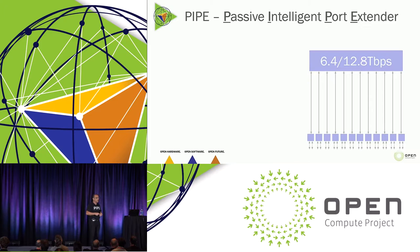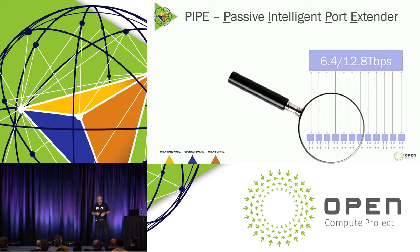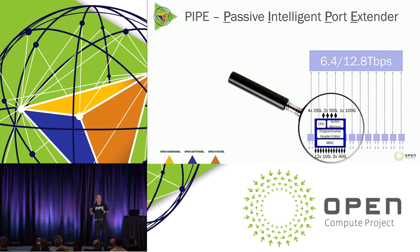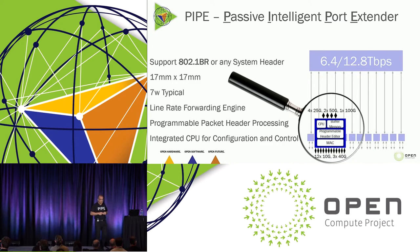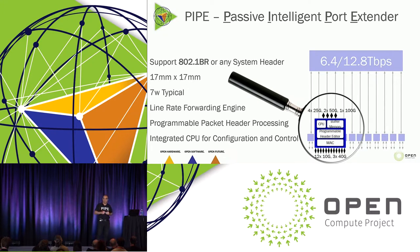Today we launched a product — the first in a series of platforms we are going to announce — PIPE: Passive, Intelligent Port Extender. The product can be viewed as software-defined MACsec-to-MACsec. It has 100 Gig, multiple 25 Gig upstream, and 12×10 Gig downstream or 40 Gig. It has a programmable header editor, so it can intelligently look at the packet header and send them to the right port in the downstream. It's uniquely small and low power. It's standards-based, supporting dot1BR.